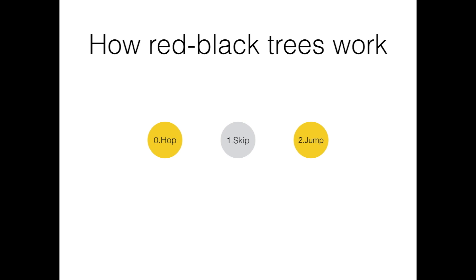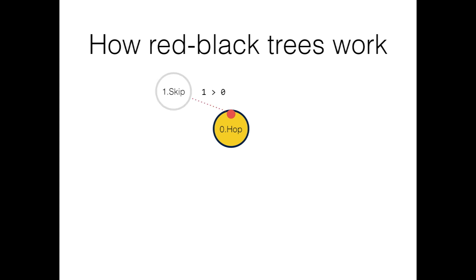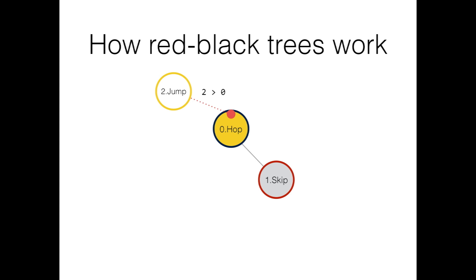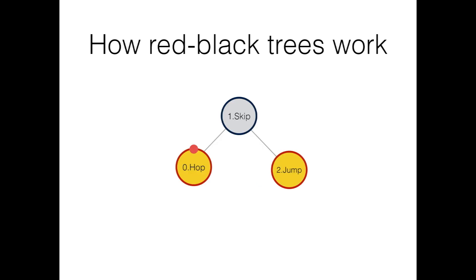Let's see what it looks like to insert three items in a red-black binary tree: hop, skip, and jump. The first inserted item, hop, will become the root node. As we insert other items, they compare the keys — in this case the indices — of the two items. If the new item's key is higher, it goes to the right. So skip goes to the right and is given a color. Jump should go after hop and skip. However, the coloring rules are now violated, so the red-black tree is rotated, maintaining the tree's balance and fast updates and reads.